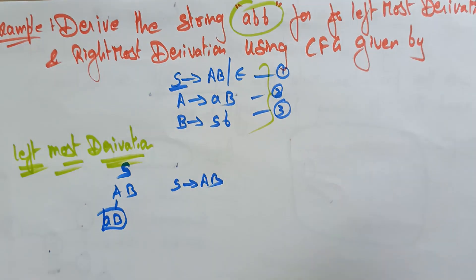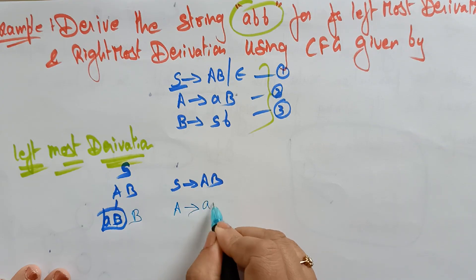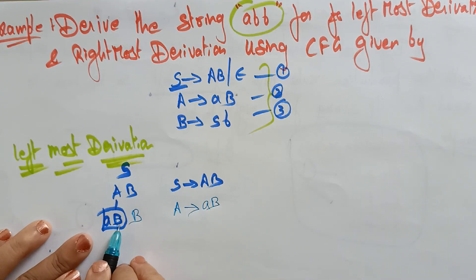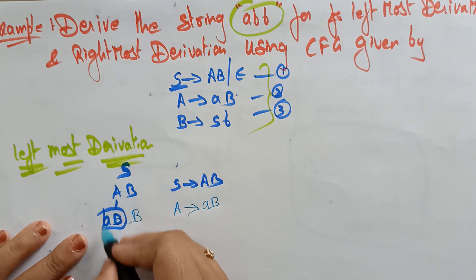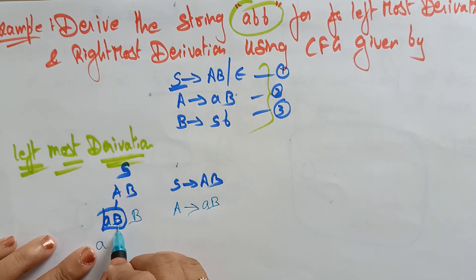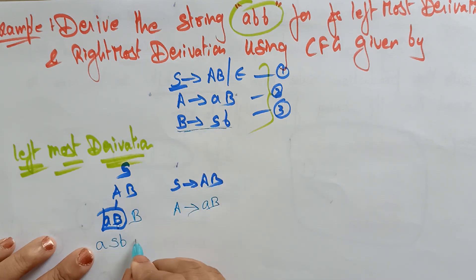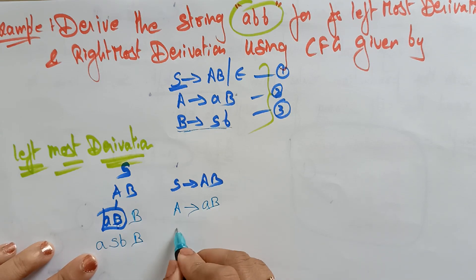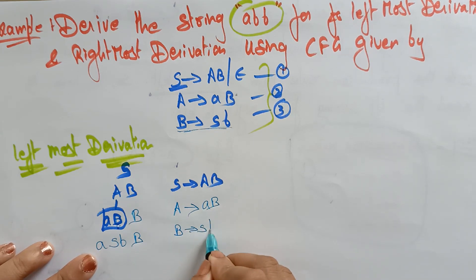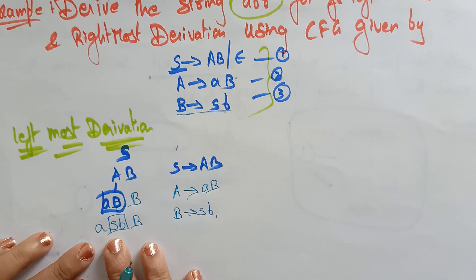Let me take the pen so it will be clear. I replaced A with small 'ab', so we have 'ab B'. The remaining non-terminal on the left side is B, so now I am replacing B with SB.